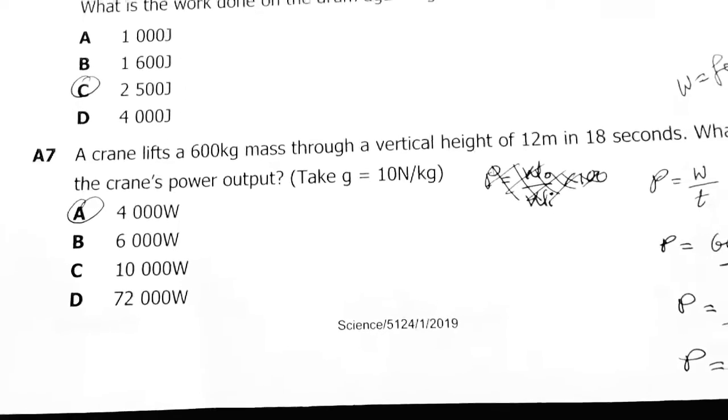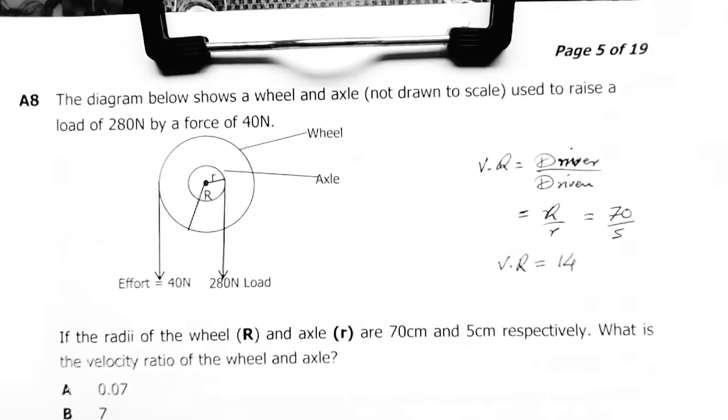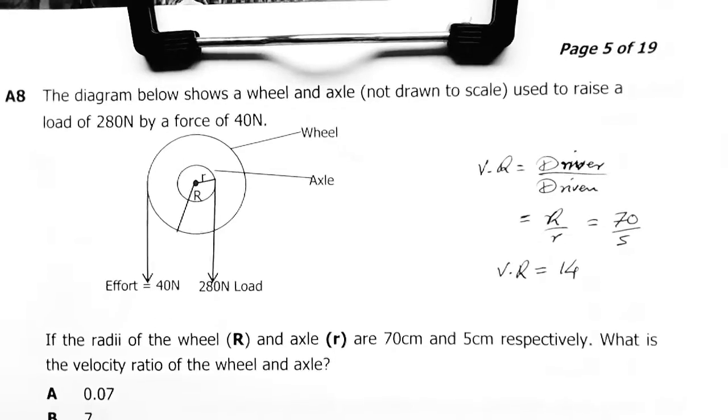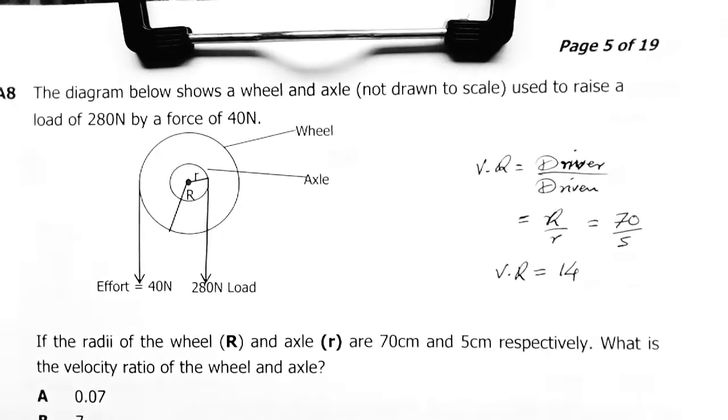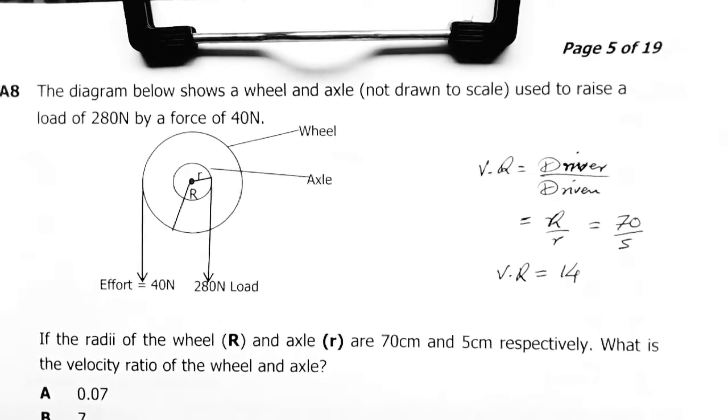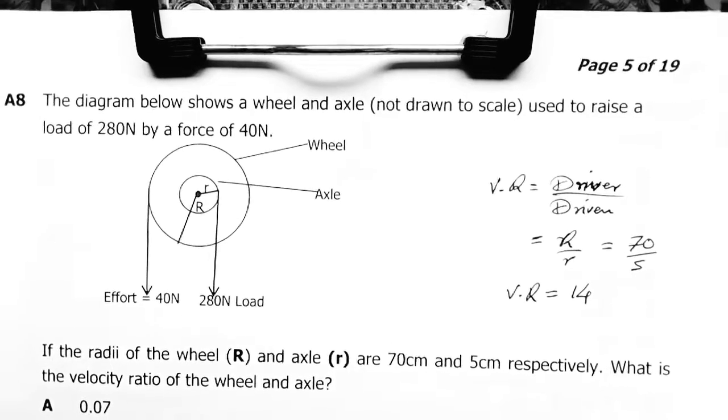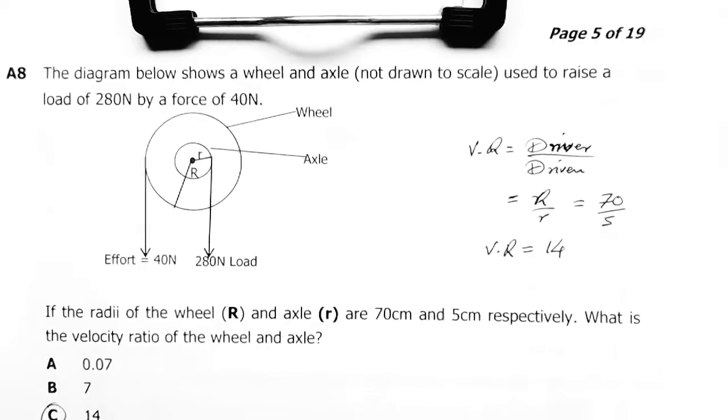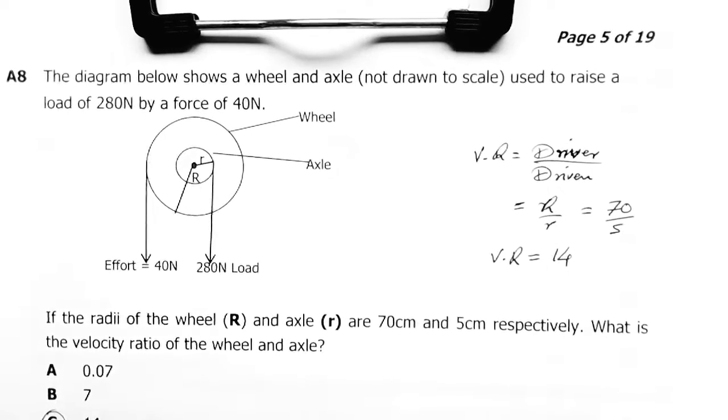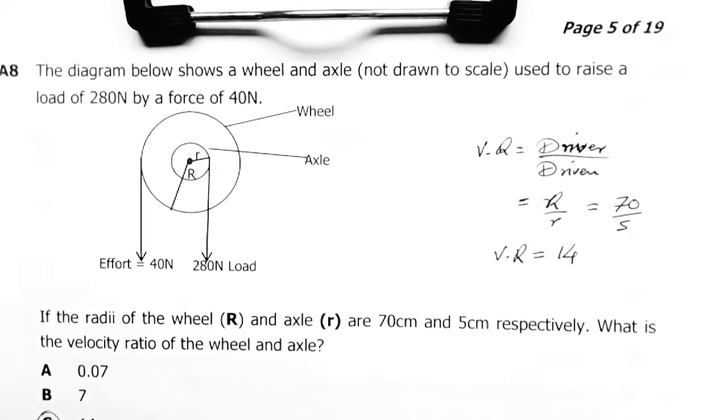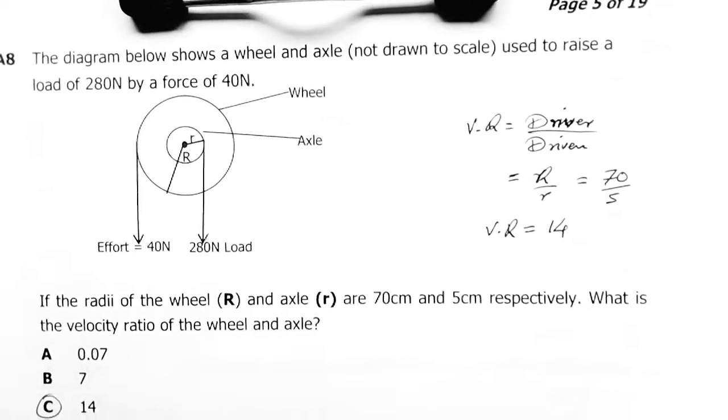Question 8: The diagram below shows a wheel and axle, not drawn to scale, used to raise a load of 280 newtons by a force of 40 newtons. If the radii of the wheel and axle are 70 and 5 respectively, what is the velocity ratio of the wheel and axle?